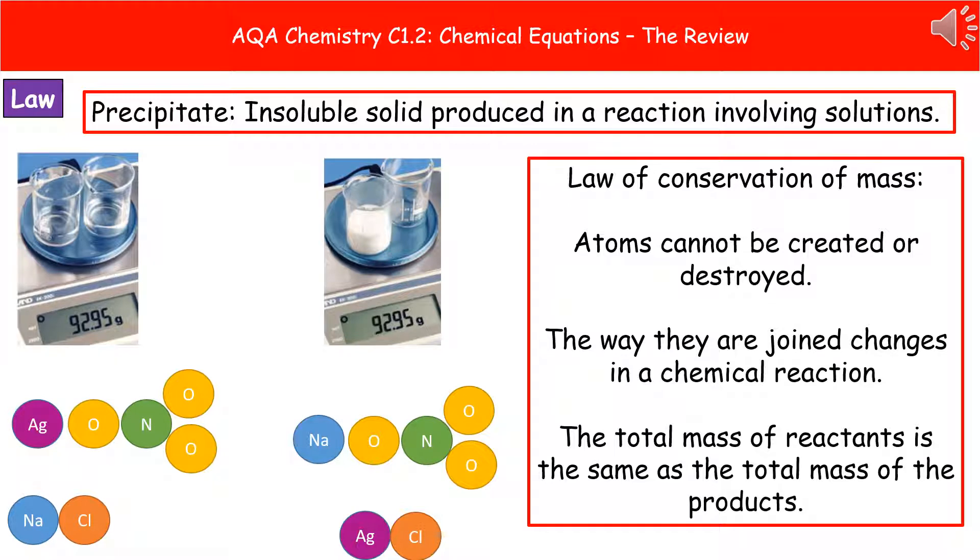Before we go on any further looking at the other types of equation, we need to have a little break to think about what's happening in this chemical reaction. I've given you an example here where on the left you can see we've got two colorless liquids with a combined mass of 92.95 grams. And on the right, we've combined them together in one beaker, which has now changed. It's had a chemical reaction, but the mass is still 92.95 grams. We've made a precipitate in the one on the right, which is quite simply an insoluble solid, which is produced when we have a reaction that involves solutions.